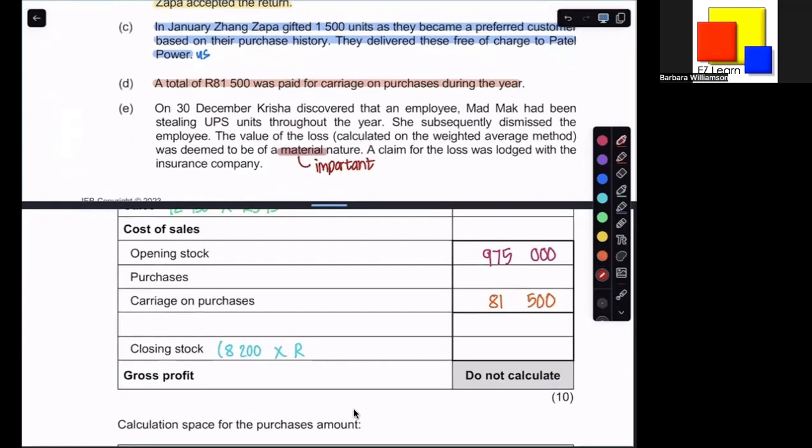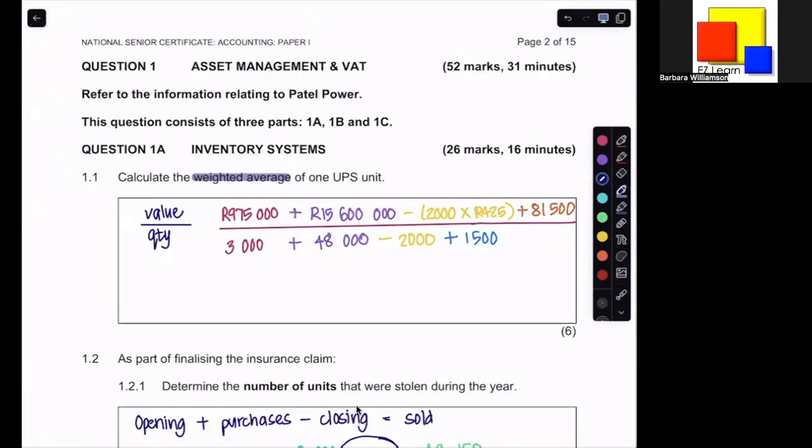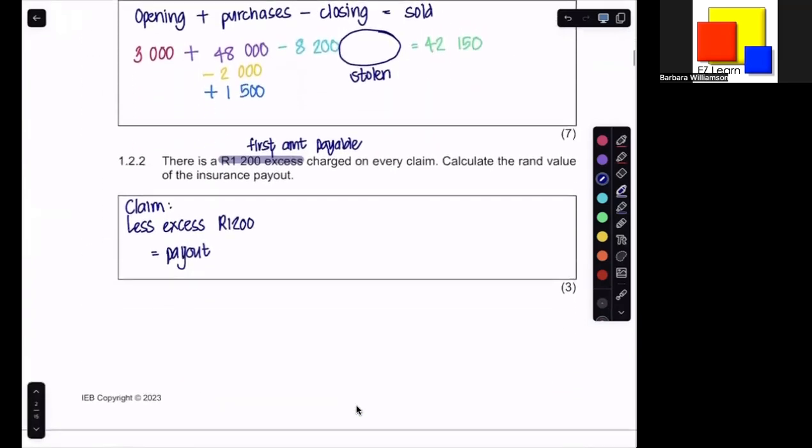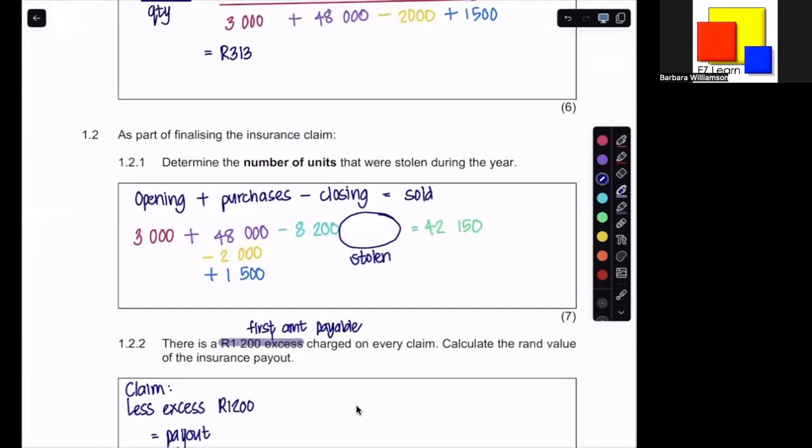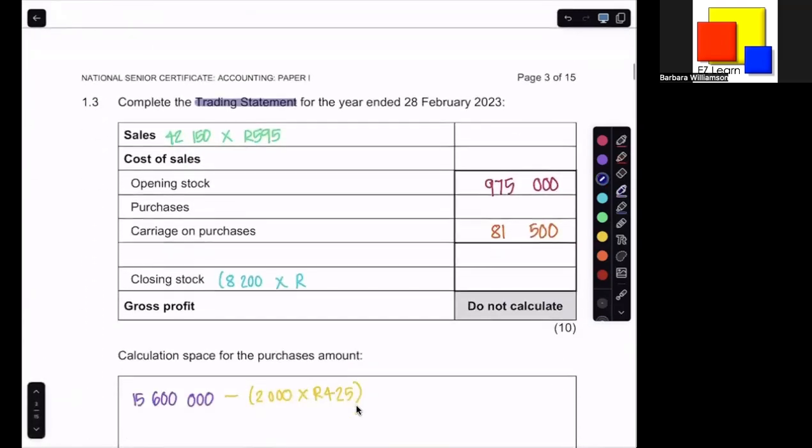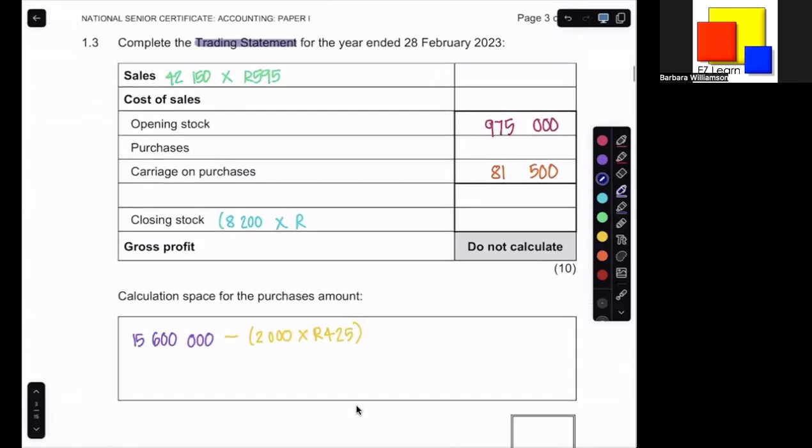Now that we've used all of that information, we can go and do our calculations. Adding all of these numbers together and working it out should then give you a weighted average of 313 rand per unit. So that means that I can now take that and use that partly in the amount of the claim. Once we know how many units have been stolen, it's going to be 313 per unit. I can also use it over here when I'm looking for the value of my closing stock. We now know that it's going to be at 313.